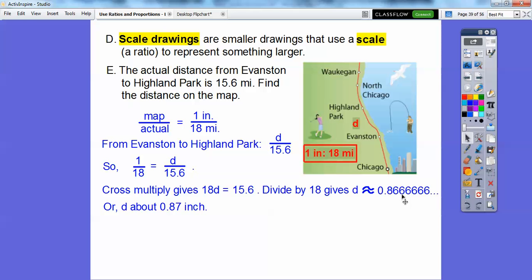So since this is five or bigger, since this is bigger than five, then this increases by one. So it became 0.87. And this is read as 87 hundredths because it ends in the hundredth spot. So that would be the actual map distance from here to here, 87 hundredths of an inch. So a little bit less than an inch right there.